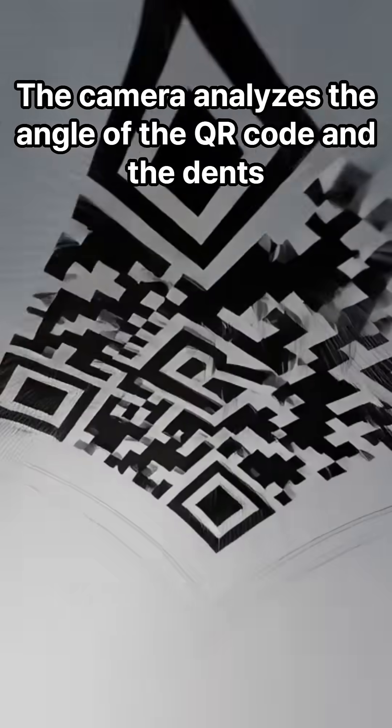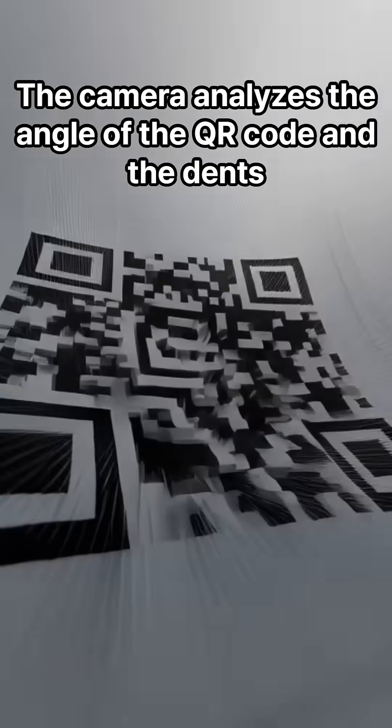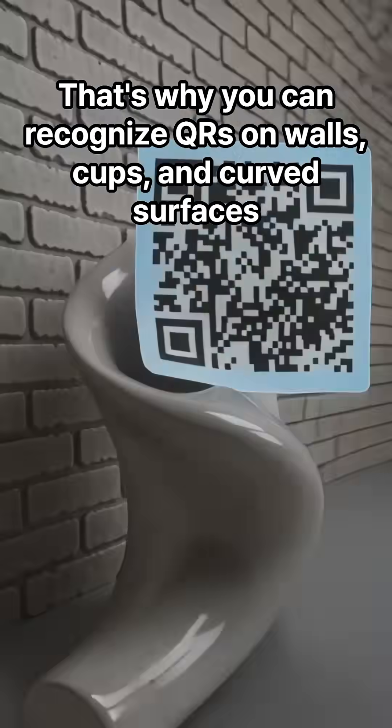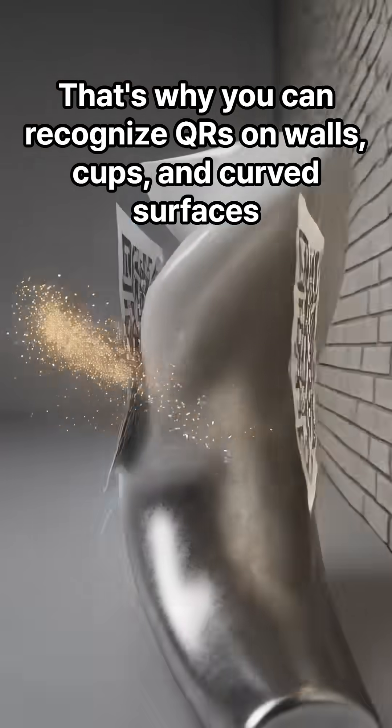Then the distortion correction starts. The camera analyzes the angle of the QR code and the dents. It uses a technology called perspective transformation to spread the QR code flat as if you saw it from the front. That's why you can recognize QR codes on walls, cups, and curved surfaces.